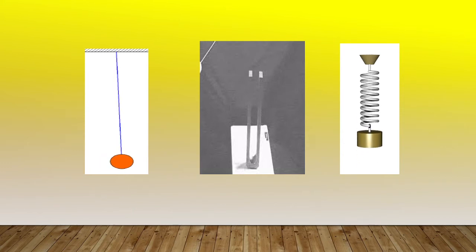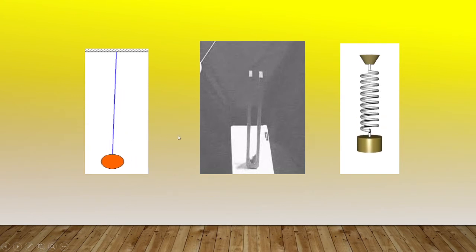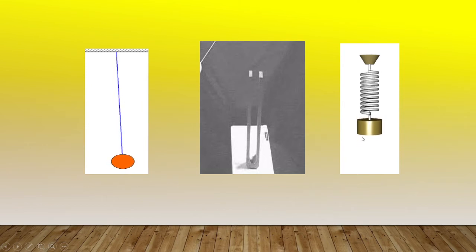Some examples of simple harmonic motion are: motion of a simple pendulum, a vibrating tuning fork, and a spring mass system.